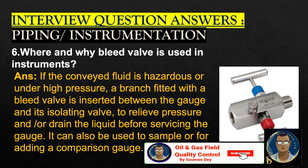Where and why are bleed valves used in the instrument? The photo shows a bleed valve. If the conveyed fluid is hazardous or under high pressure, a branch fitted with a bleed valve is inserted between the gauge and its isolating valve to relieve pressure and/or drain the liquid before servicing the gauge. It can also be used to sample or for adding a comparison gauge.